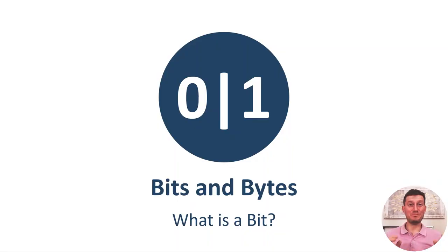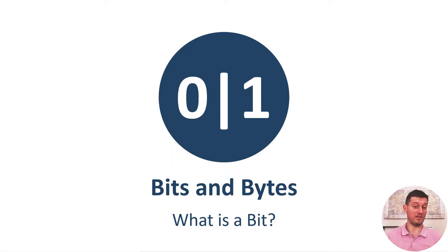Let's start with bits. Bits are these very small portions of data — 1s and 0s — used to represent numbers, text, and anything else in the digital world.